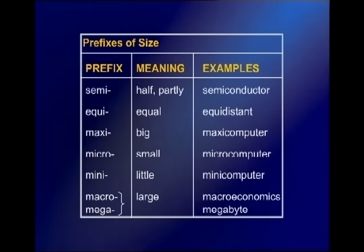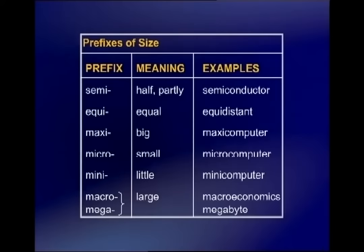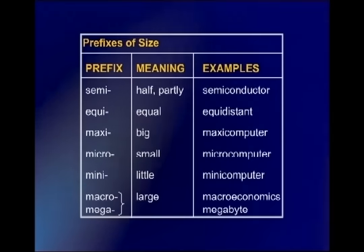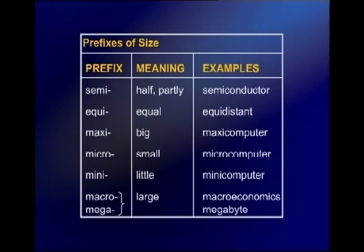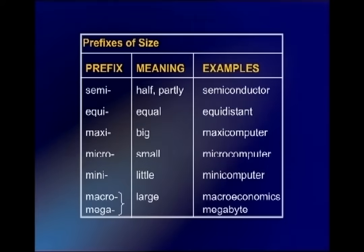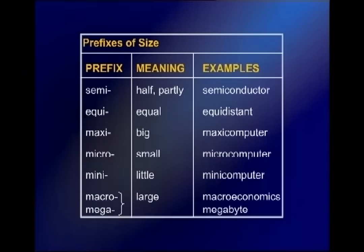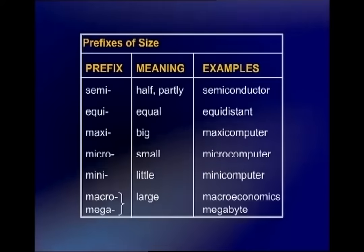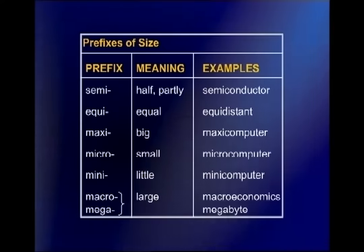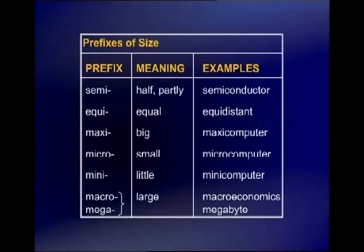Let us look at prefixes of size. 'Semi' means half or partly, like a semiconductor. 'Equi' means equal, as in equidistant. 'Maxi' means big, as in maxi-computer. 'Micro' means small, as in micro-computer. 'Mini' means little. The prefixes 'macro' and 'mega' both mean large — for example, macroeconomics and megabyte.